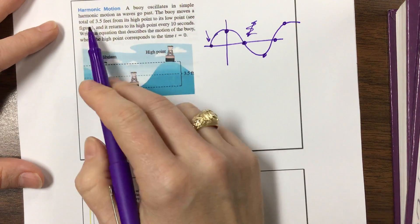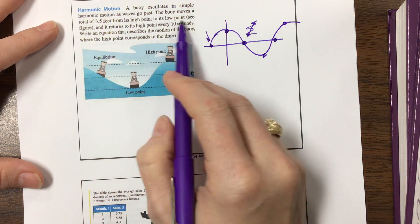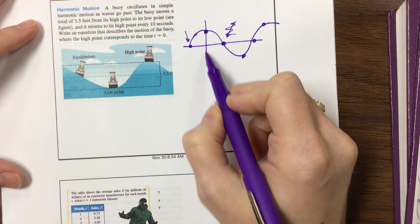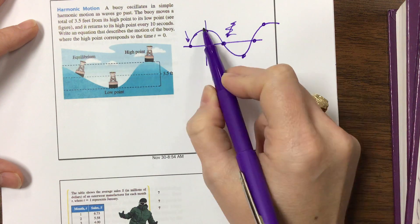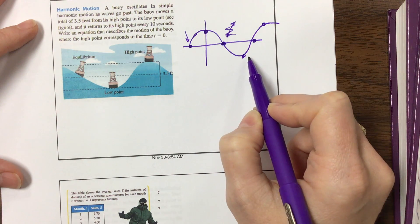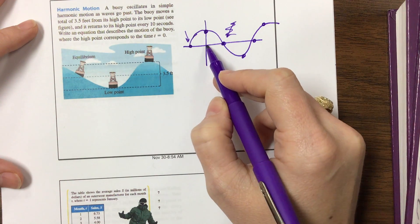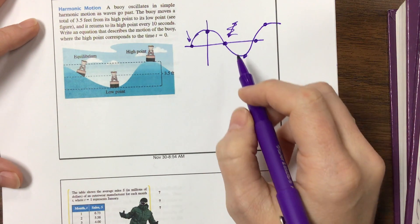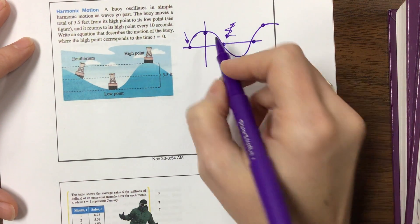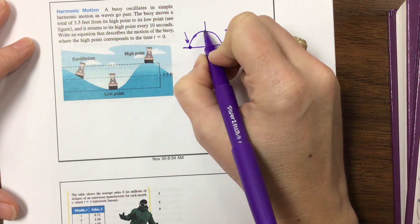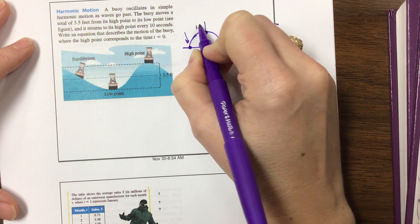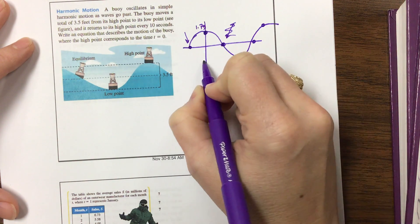So what did they tell us? It moves a total of 3.5 feet from its high point to its low point. So this total distance from the very top to the very bottom is 3.5. So that means, what's half of 3.5? 1.75. So this would be a positive 1.75, and this would be a negative 1.75.